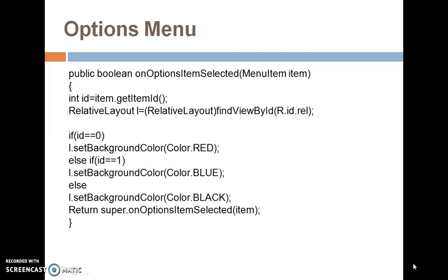Option Menu is implemented using two methods. The first is OnOptionsItemSelected, written as: public boolean OnOptionsItemSelected(MenuItem item). We can get the ID of the list items using the getItemId method, and an instance of the layout is created using RelativeLayout, found via findViewById(R.id.layoutName).